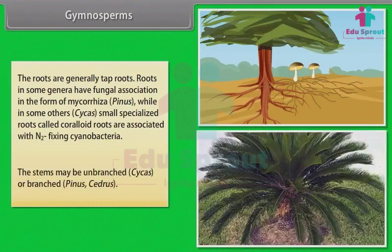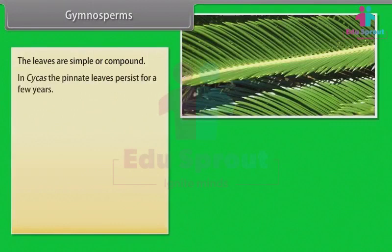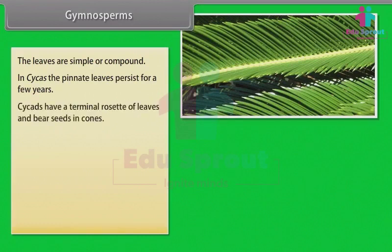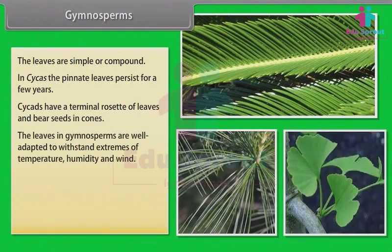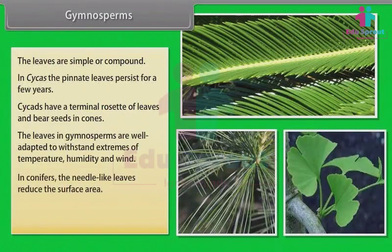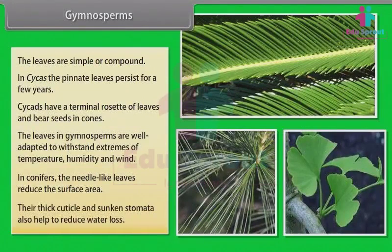In some others, such as Cycas, small specialized roots called coraloid roots are associated with nitrogen-fixing cyanobacteria. The stems may be unbranched, as in Cycas, or branched, as in Pinus and Cedrus. The leaves are simple or compound. In Cycas, the pinnate leaves persist for a few years. The leaves in gymnosperms are well adapted to withstand extremes of temperature, humidity, and wind. In conifers, the needle-like leaves reduce the surface area; their thick cuticle and sunken stomata also help to reduce water loss.